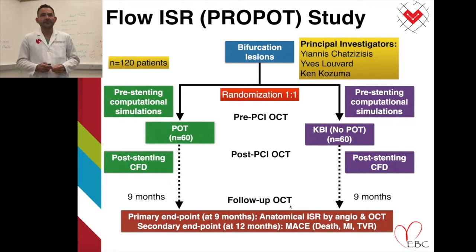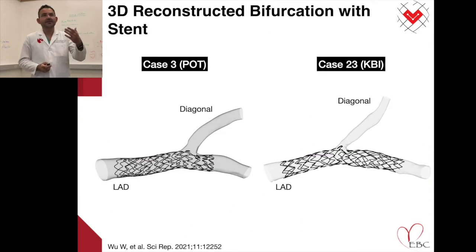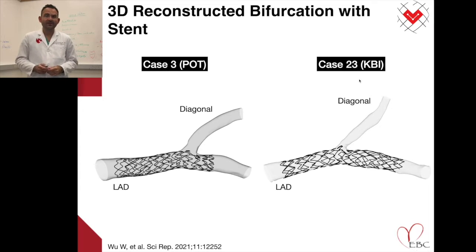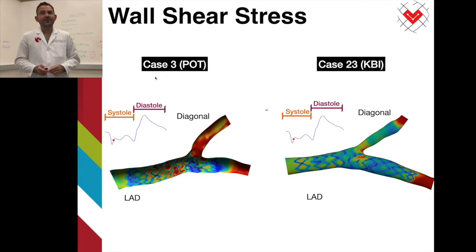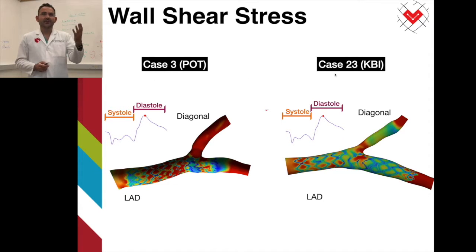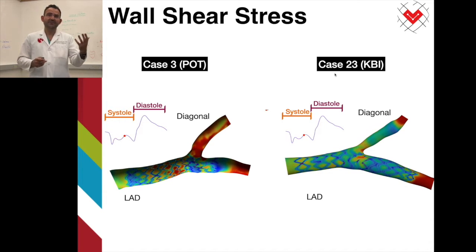Using our sophisticated algorithms, we 3D reconstruct the implanted stents using OCT. Here is an example of the 3D reconstructed stent by OCT in a patient with POT and a patient who had post-dilatation with KBI. These are patients who had one stent technique post-dilated with either POT or KBI. We then calculate the flow distribution and shear stress in POT versus KBI patients, giving us the opportunity to compare flow distribution between two different post-dilatation techniques.